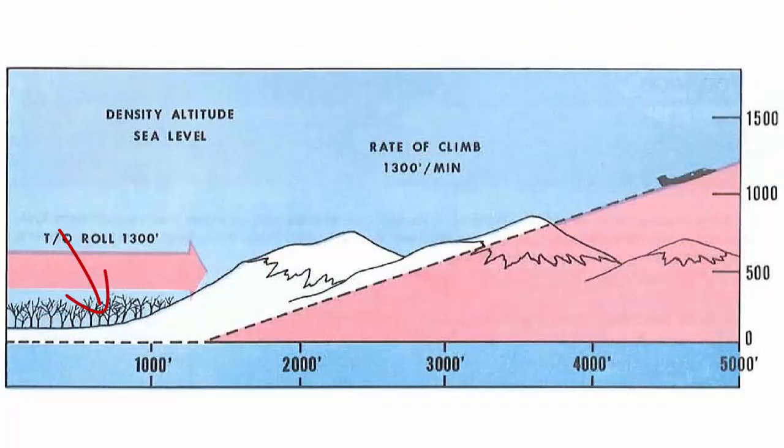Low elevations, high atmospheric pressure, low temperatures, and low humidity are more indicative of low density altitude.